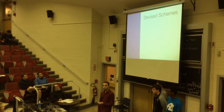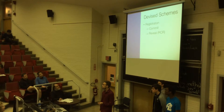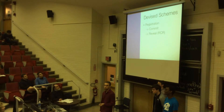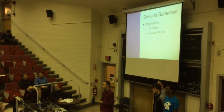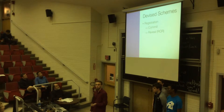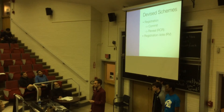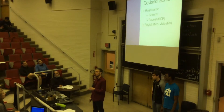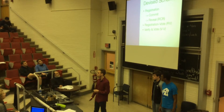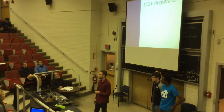We devised three schemes. The first is what we call the Registration Commit Reveal, or RCR scheme. The next two are derivations and simplifications of that scheme, which we call the Registration Vote, or RV scheme, and the Verify Vote, or VV scheme.